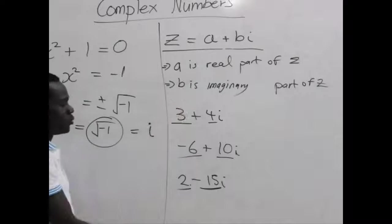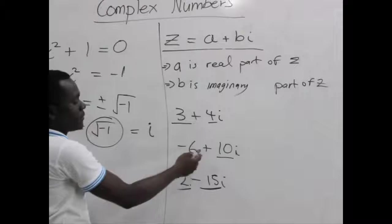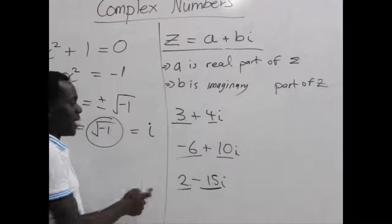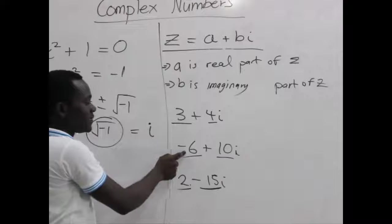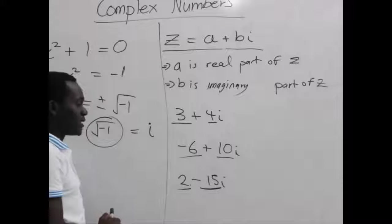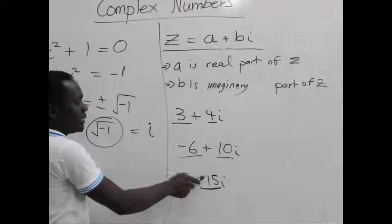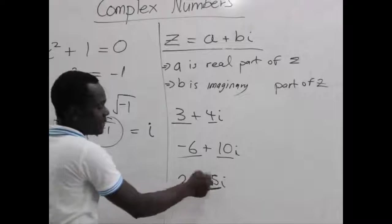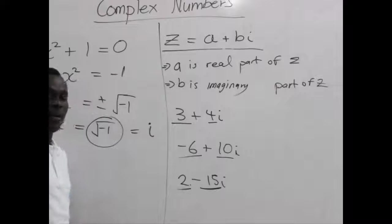And we chose some examples: 3 + 4i, 3 is the real part, 4 is the imaginary part. Negative 6 + 10i, negative 6 is the real part, the 10 is the imaginary part. 2 - 15i, the 2 is the real part because the negative 15 is our imaginary part.